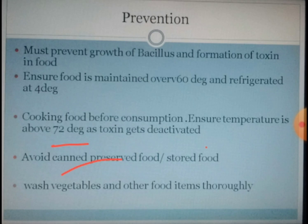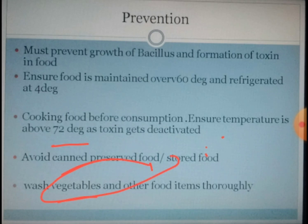Avoid keeping or preserving food for long durations. The organism will be present in spore form, and if the food is stored, the spores get the required conditions to germinate into vegetative cells and produce toxins. Consume food as soon as it is cooked. Since spores easily spread from soil onto the surface of vegetables and fruits, wash vegetables and other food items thoroughly before eating and using them.